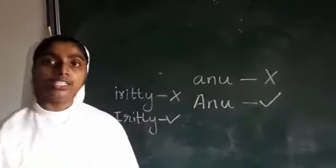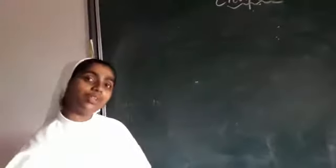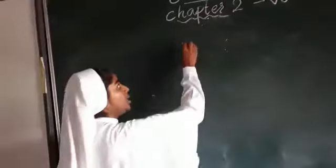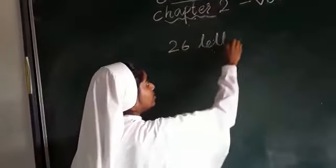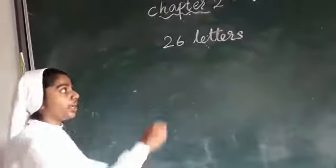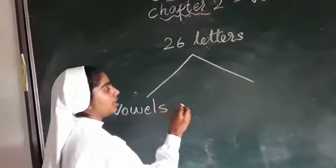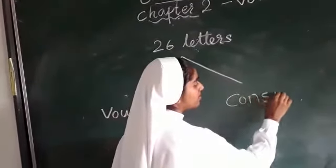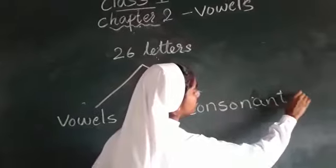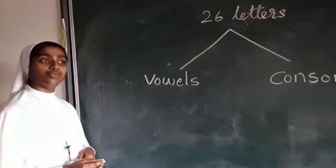Now we are going to learn vowels. You have learnt — you can see how many vowels are there. How many vowels are there? There are 5 vowels. How many letters are there in the alphabet? There are 26 letters. These 26 letters we can divide into 2. What are they? Vowels and consonants. How many vowels are there? There are 5 vowels.